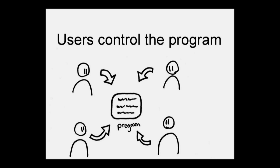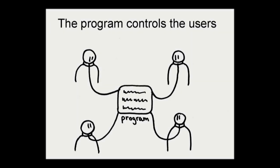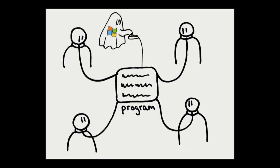But if any of those freedoms is missing, then the users don't control the program. Instead, the program controls the users and the developer controls the program. So that means this program is an instrument of unjust power for its developer over the users — the users don't have freedom. That's non-free proprietary software, which we've got to get rid of.